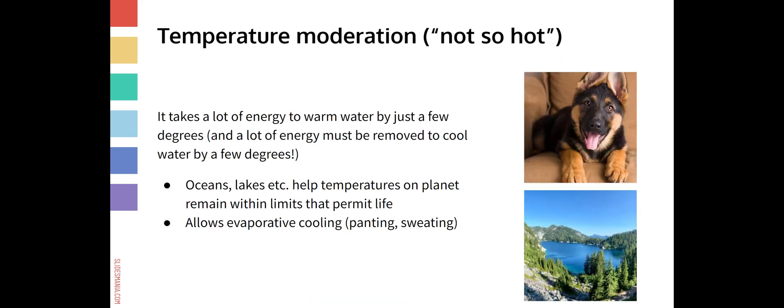The next line is not so hot. And this refers to temperature, water's ability to moderate temperature. Temperature moderation is due to the fact that water has what's called a high specific heat. But basically, it's the idea that it takes a lot of energy to warm up water by just a few degrees, and also a lot of energy to cool down water by a few degrees. In that case, you'd be losing energy rather than gaining energy. And one reason this is important is that all of the liquid water on the planet's surface helps keep temperatures within a range that permits life. It prevents things from getting too hot or too cool. And if you think about going into the water on a hot summer day, oftentimes the water is a lot cooler than the area around it.